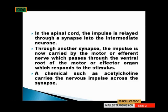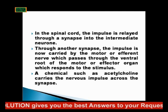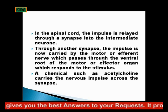In the spinal cord, the impulse is relayed through a synapse into the intermediate neuron — that is the connector neuron. Then, through another synapse — a synapse being the space between two nerve cells or two neurons — the impulse is relayed from one nerve cell to another through a synapse into the intermediate neuron.